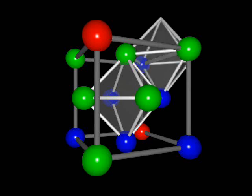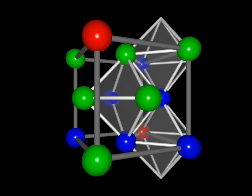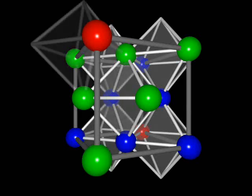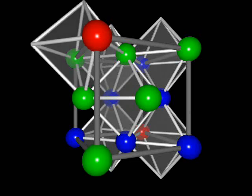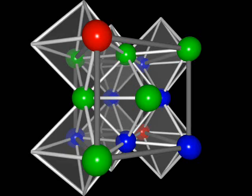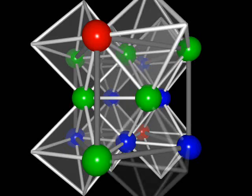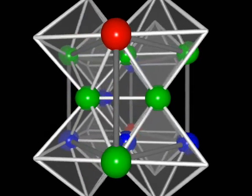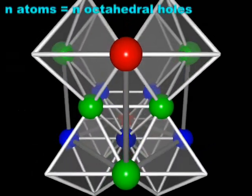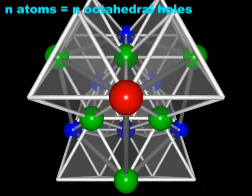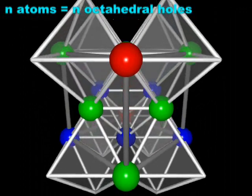Other octahedral holes lie partially inside this cell. The center octahedral hole shares each of its 12 edges with 12 other octahedral holes; eight of these are shown here. Each of these lies one-fourth inside the cell. Overall, an array of N atoms in a close-packed structure gives rise to N octahedral holes.